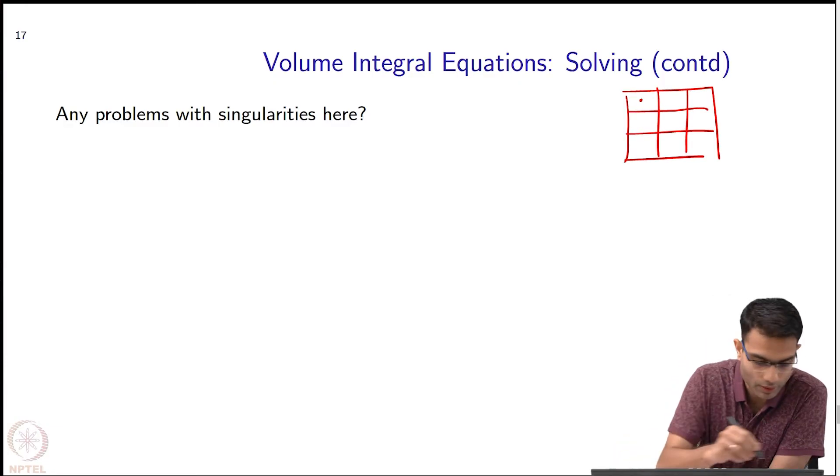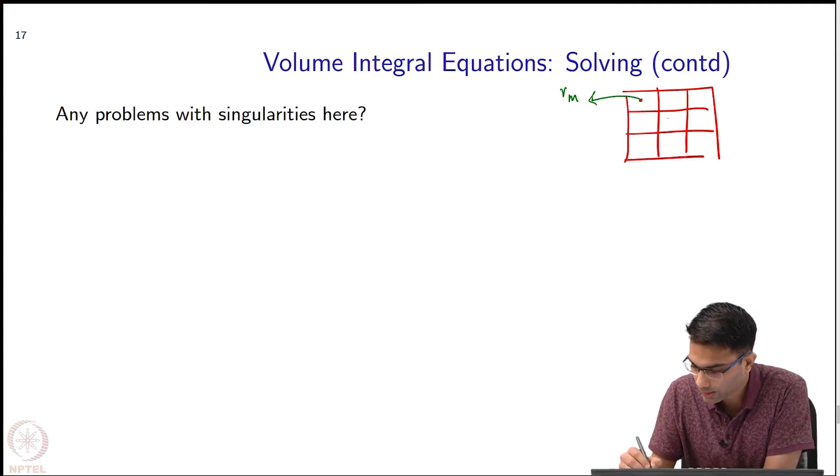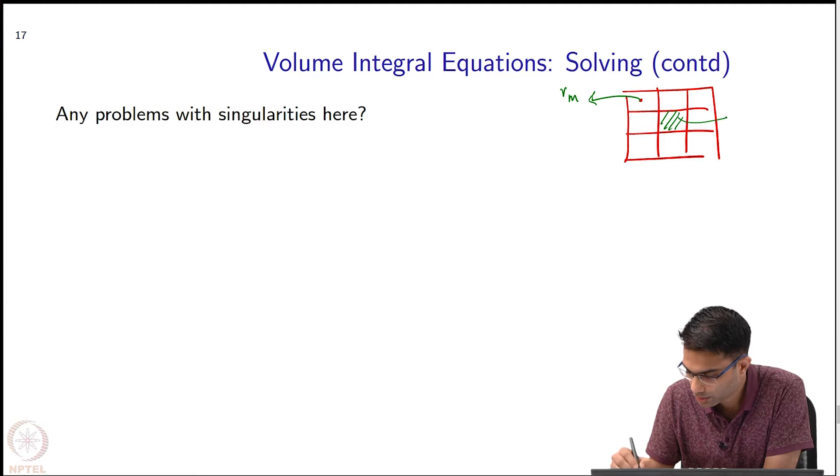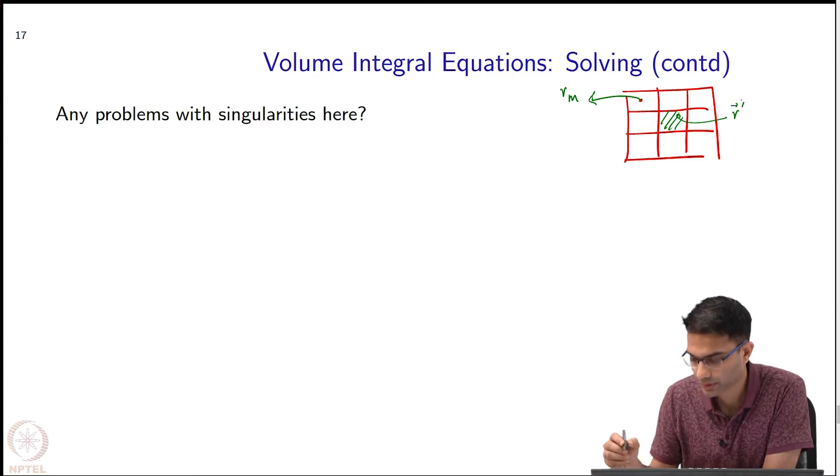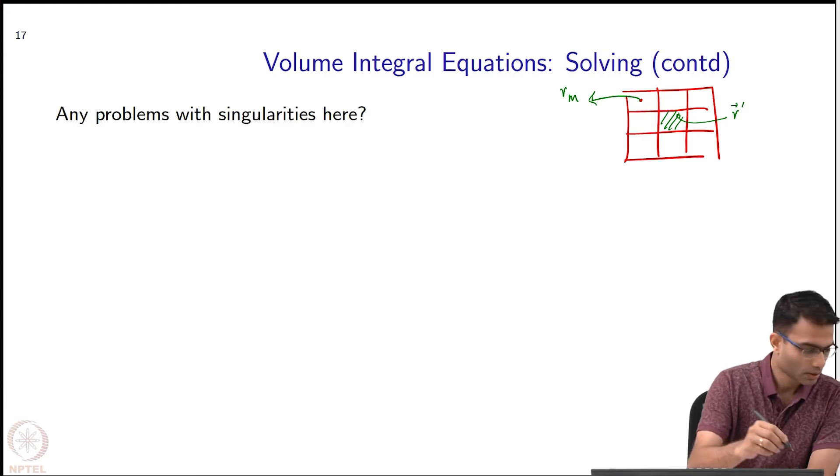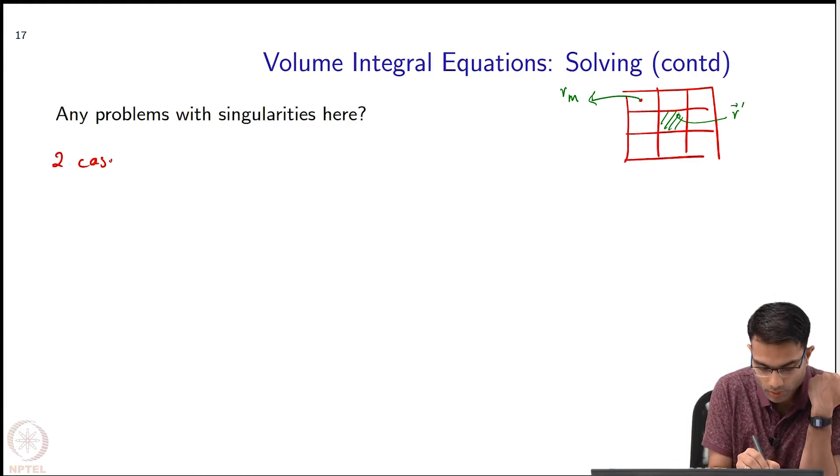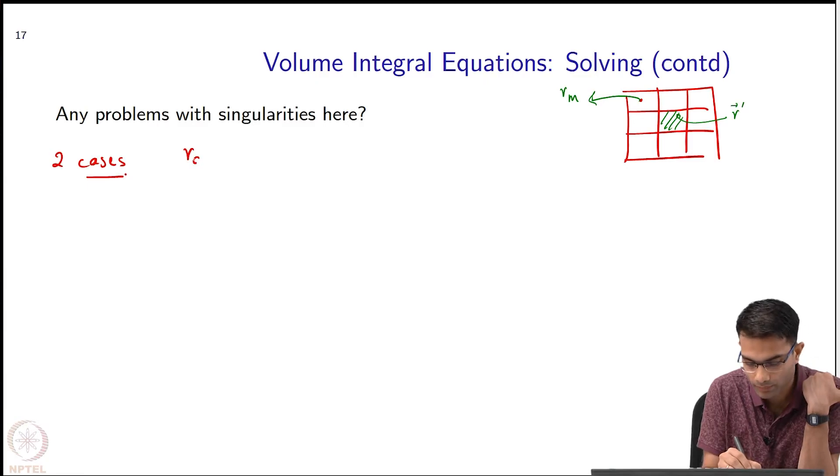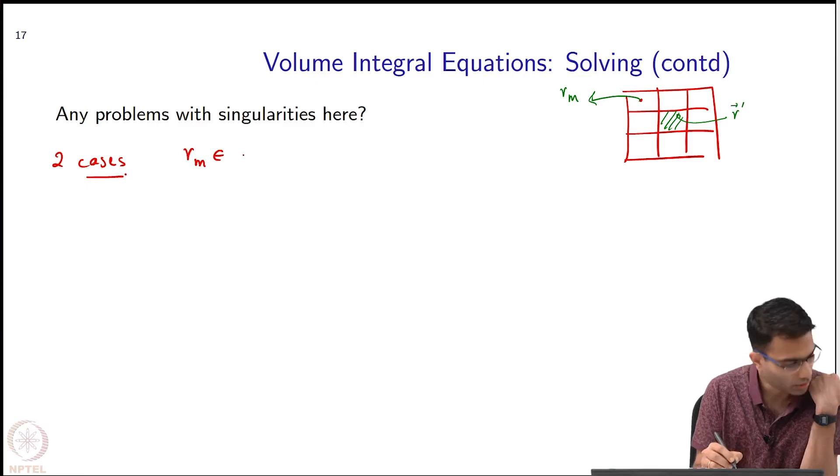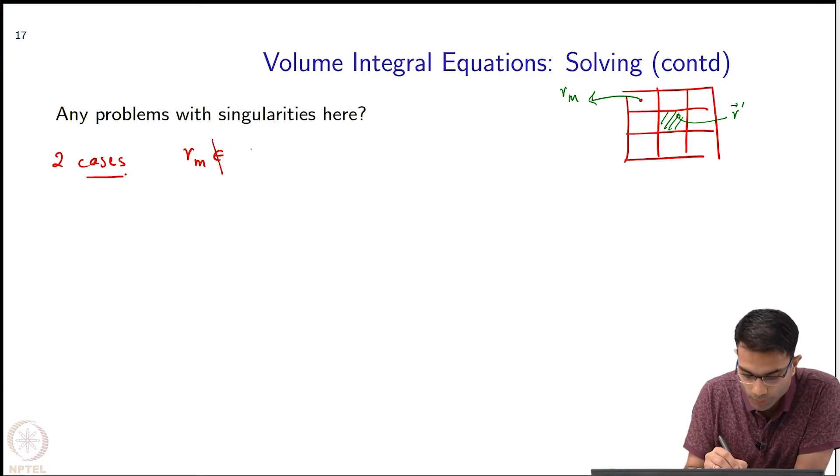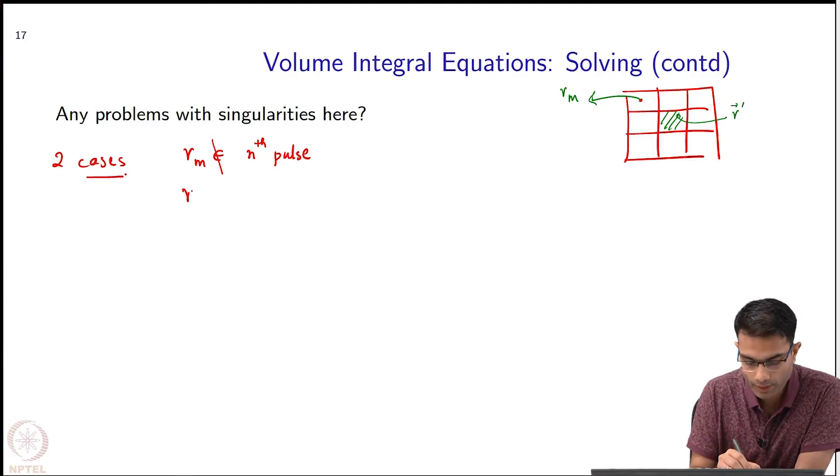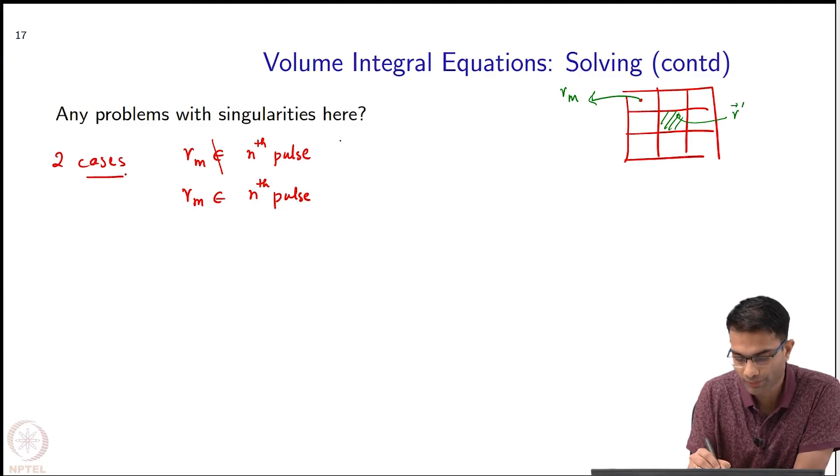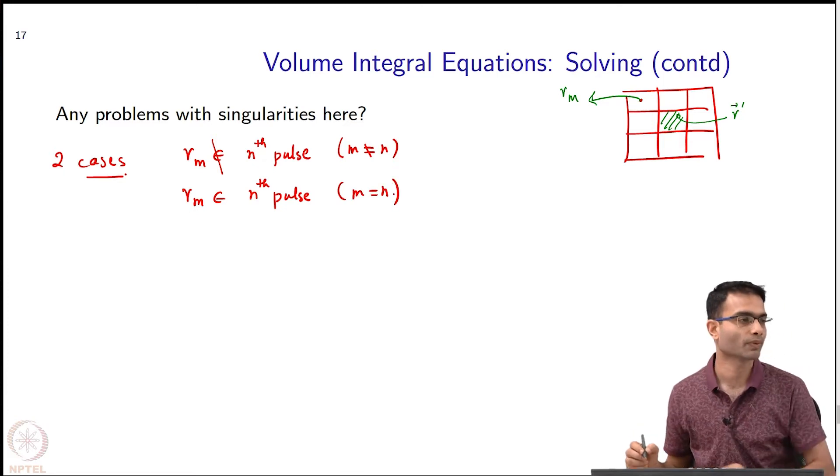So this is my R_m, and in general this could be some point over here which is R prime. So there are two cases possible. I can say that R_m does not belong to the nth pulse, and R_m belongs to the nth pulse. If you want it very simply, you can say m not equal to n and m equal to n. These are the two cases that we have to worry about.